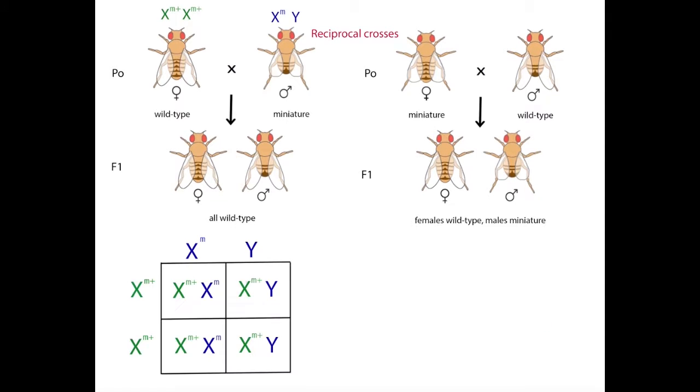Let's draw Punnett squares for these crosses to show the genotypes of the flies. All the F1 flies in this cross inherited one X chromosome from the mother, and therefore received the wild-type allele, miniature plus. All the offspring appear wild-type in wing length, since miniature plus is the dominant allele.